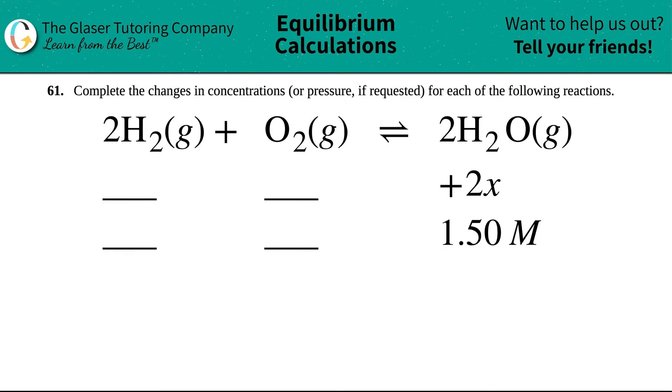Number 61, complete the changes in concentrations or pressure if requested for each of the following reactions. We have this balanced equation over here. So we have to find out the change in concentration of 2H2 gas plus O2 gas, which comes to equilibrium with 2H2O gas.